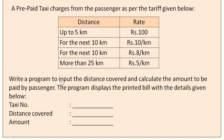Write a program to input the distance covered and calculate the amount to be paid by the passenger. The program displays a printed bill with: taxi number, distance covered, and amount. You need to get two inputs — the taxi number and the distance — then calculate the amount using the tariff table and display it as a printed bill.